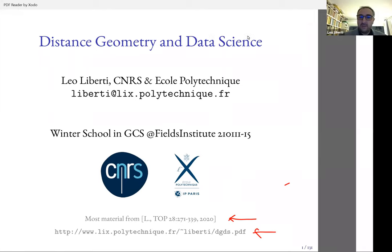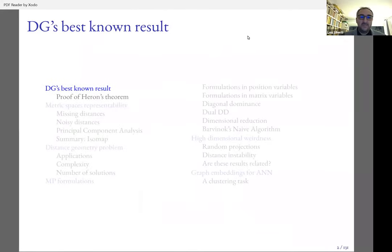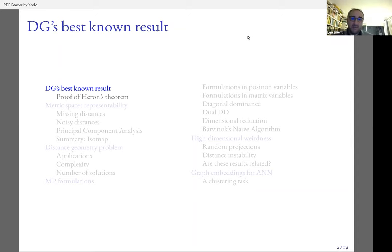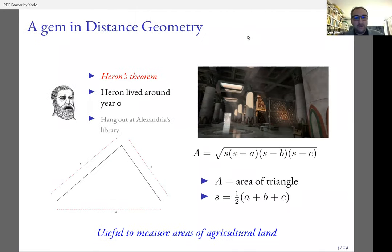This is a grayed-out contents page, and you can see some of the contents I'm going to talk about. I'm going to start with distance geometry's best known result, which is Heron's theorem. This is just a warm-up to tell you what distance geometry really is and what it's about.